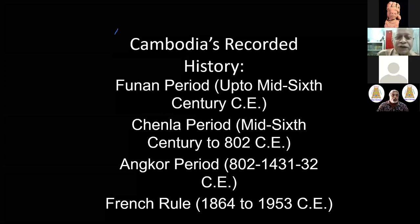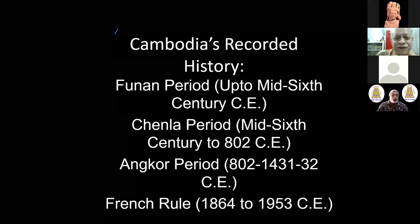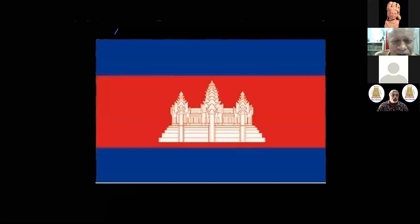After French rule, there was violence in the 1970s and 80s — the Khmer Rouge — after which peace and the traditional monarchy have been restored, with the king ruling from the capital Phnom Penh. Their flag has Angkor Wat on it — probably the only country in the whole world which has on its flag a historical monument, and that too a World Heritage site. Everything is Angkor for them.